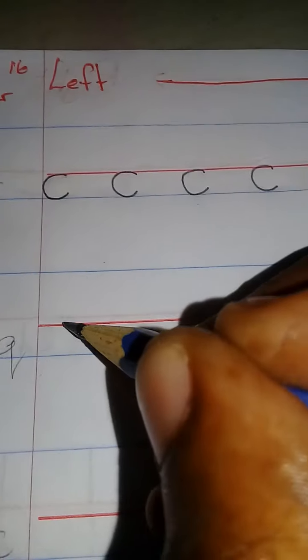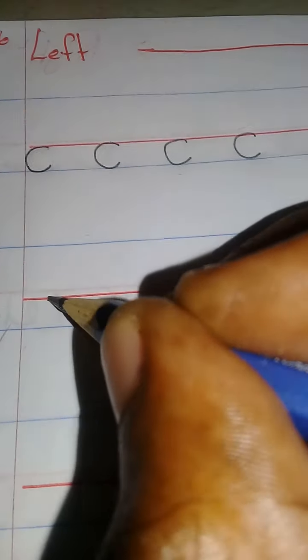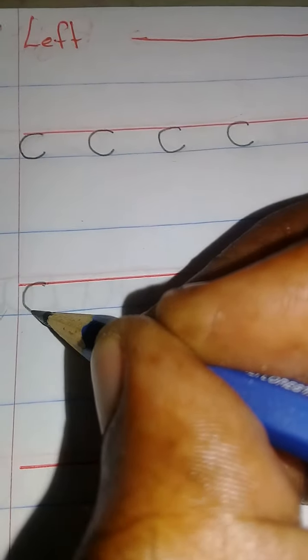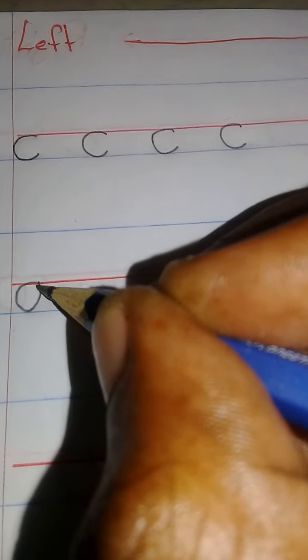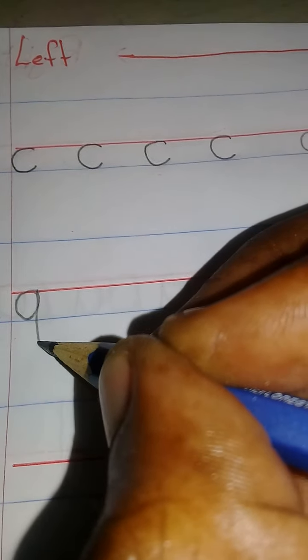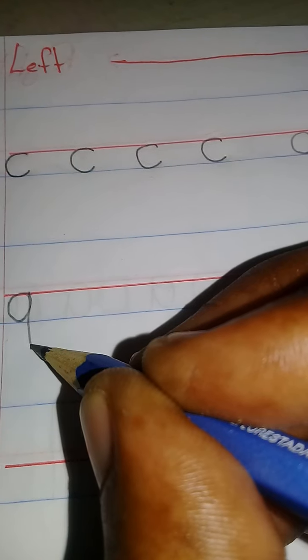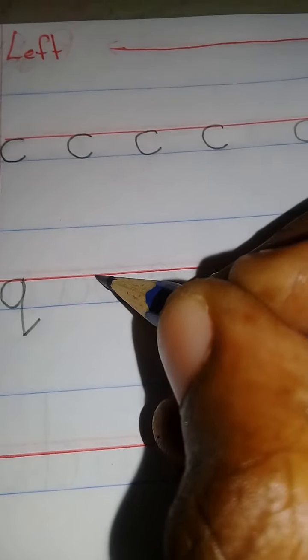Next, we practice common Q which we learned yesterday. Remember, we make our C first. We go up to touch the red line, down, and a short slanted stroke to the right. Finger space.